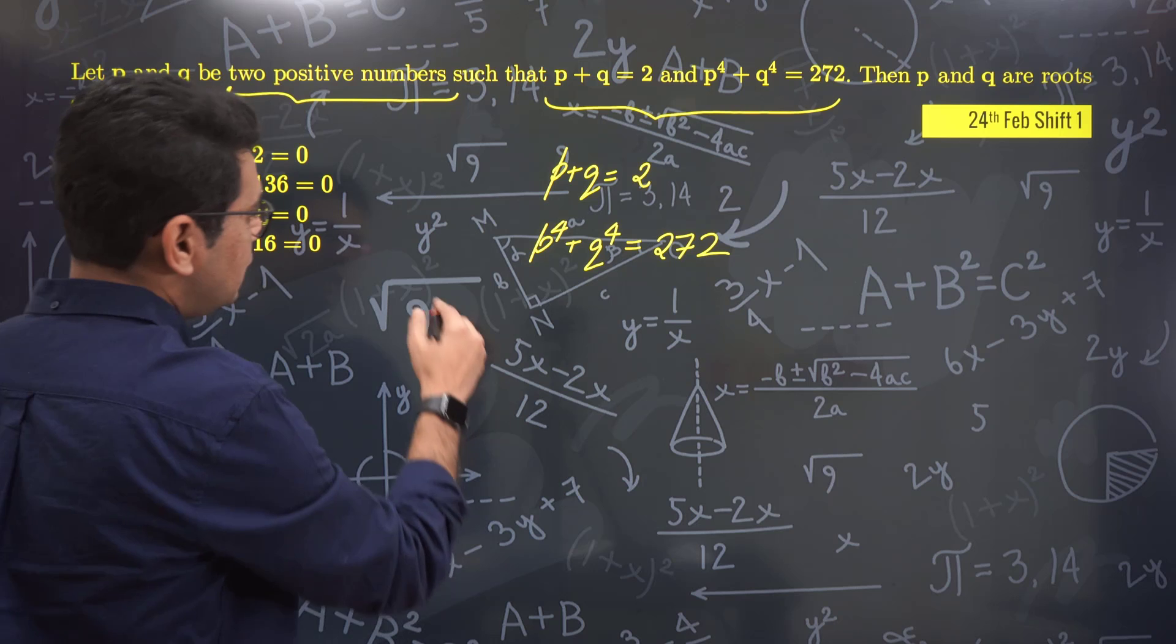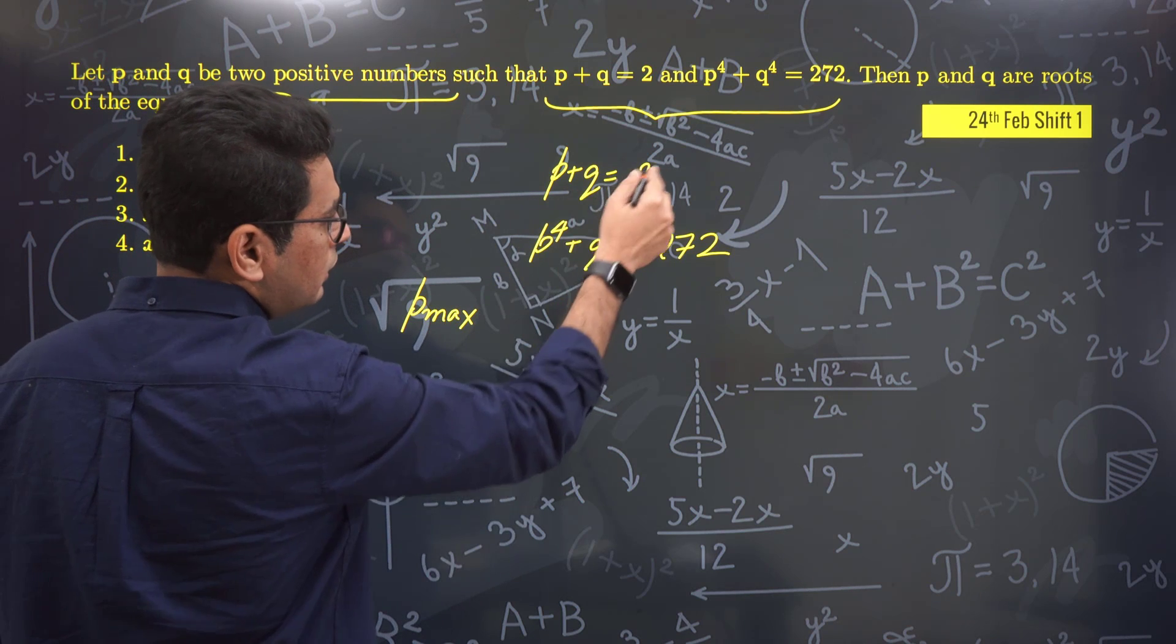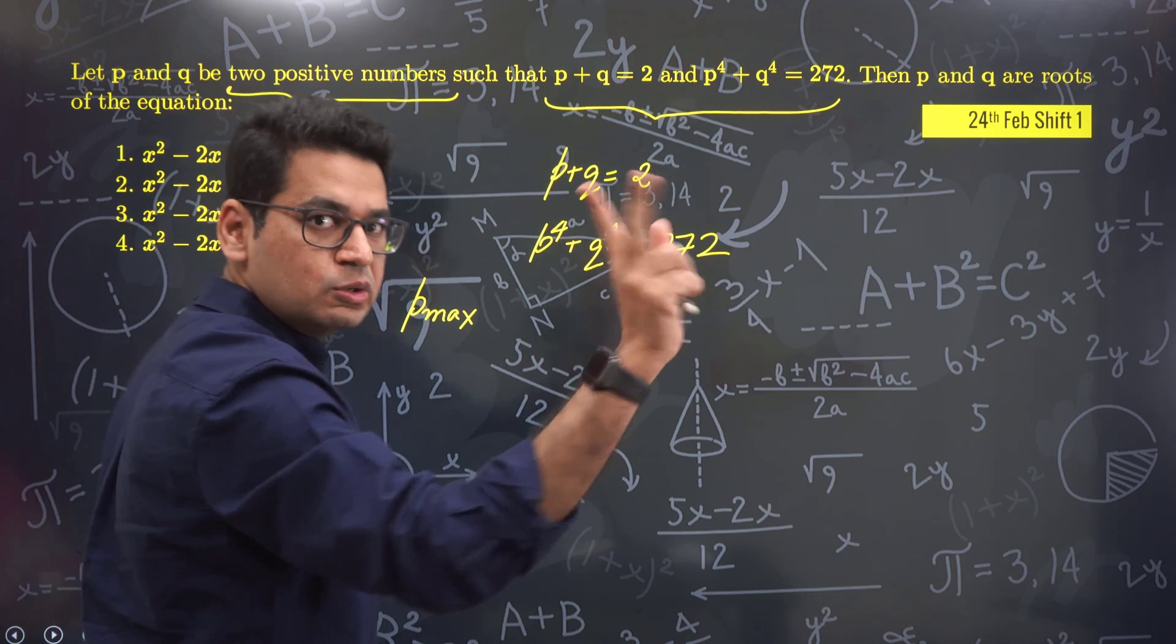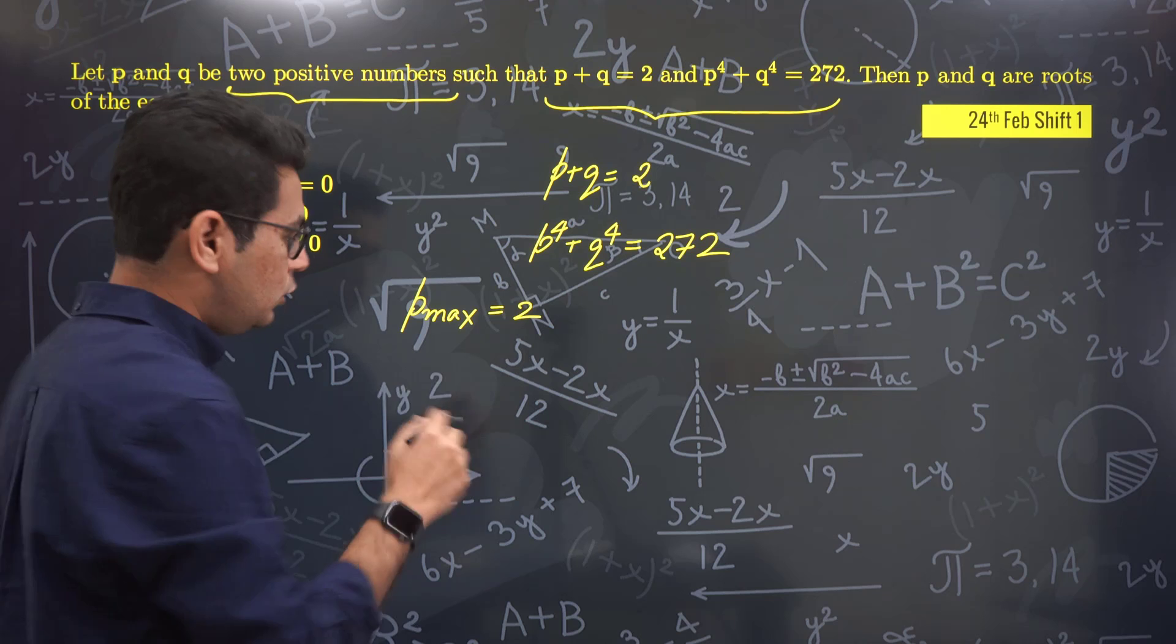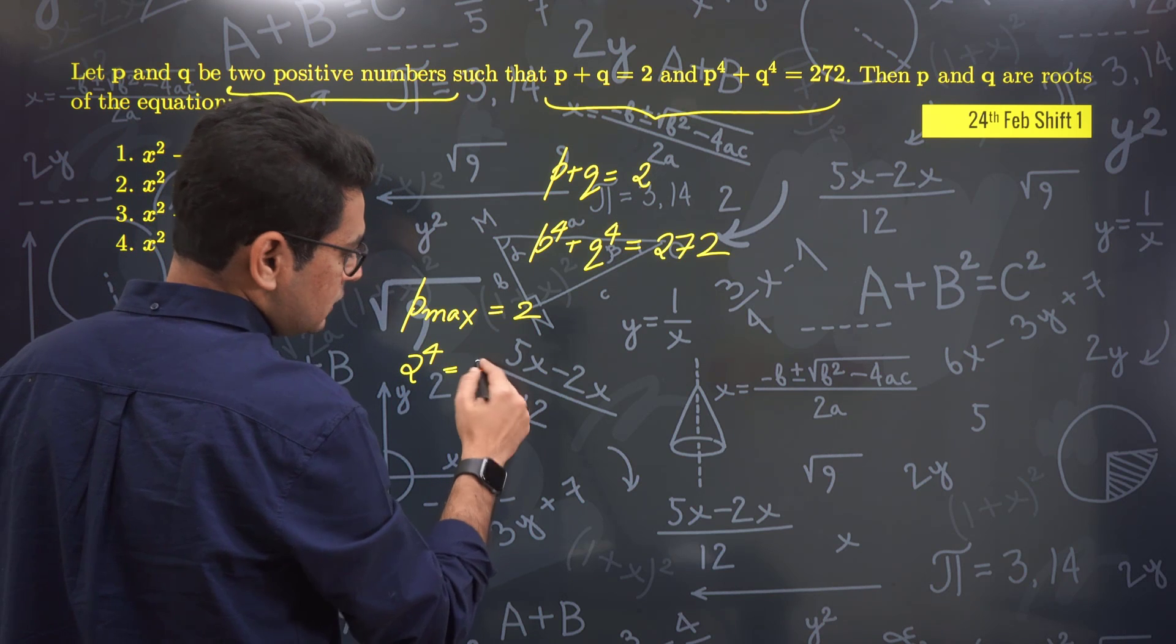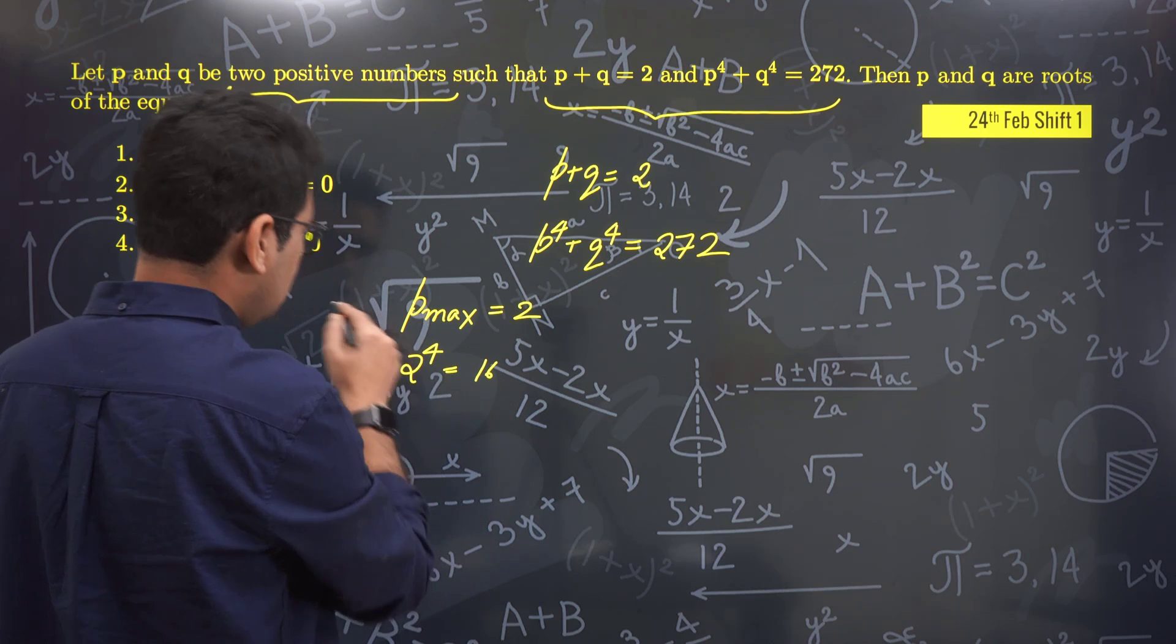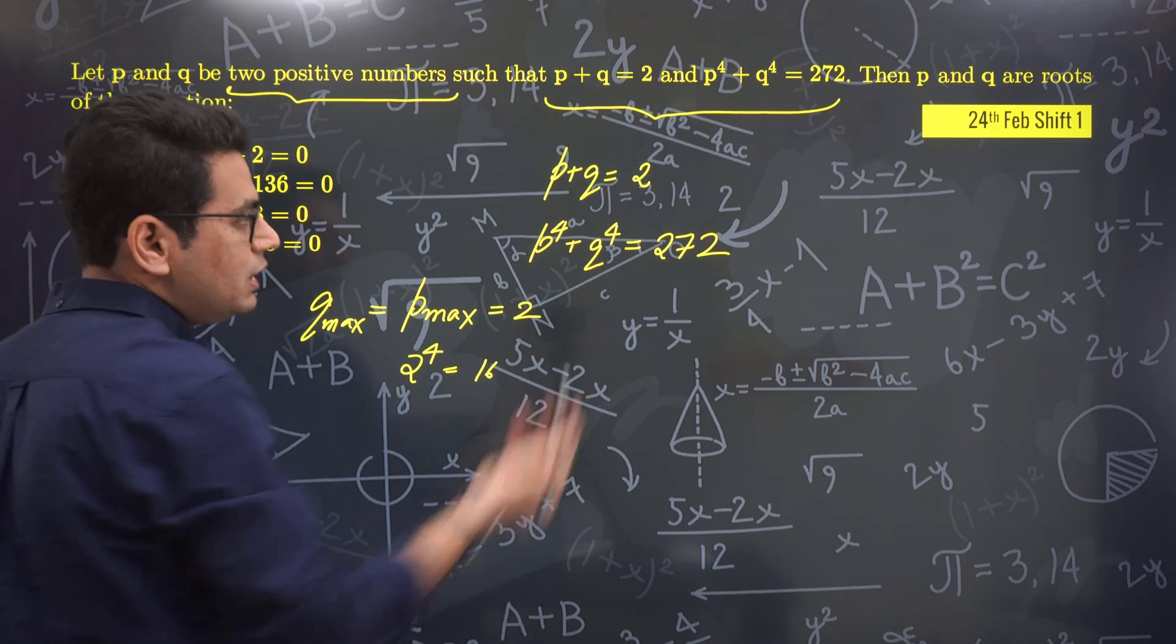If we take a little logic, p max value - we know the sum is 2, they're positive, so it can't be 2. But even if we assume it to be 2, 2 raised to power 4 would be 16. So p to the 4 is at most 16, and q to the 4 max range is also 16. So this answer of 272 is not possible.